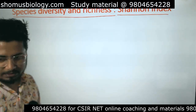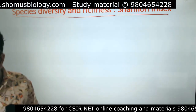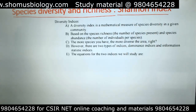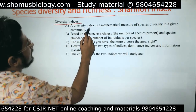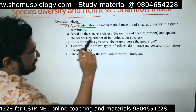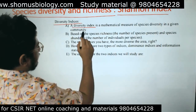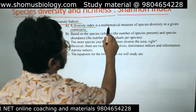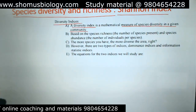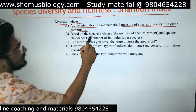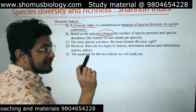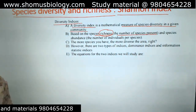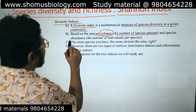Species diversity and richness is calculated by different diversity indices. One is known as the Shannon index and another is Simpson's index. A diversity index is a mathematical measure of species diversity in a given community, based on species richness — which means the number of species present.